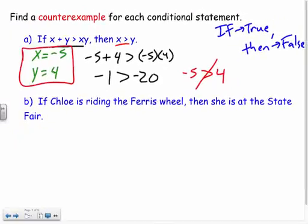So I just provided a counterexample. x could be negative 5 and y could be 4. So my if is true. My hypothesis is true. But I provided a counterexample that proved it false. That x would not be greater than y in every single case.